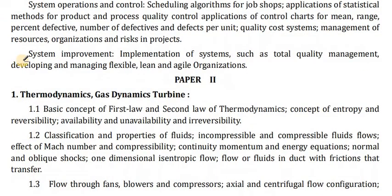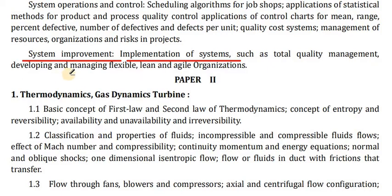Quality ecosystem management, resources, organizations, and systems improvement — implementation of systems such as Total Quality Management, developing and managing flexible, lean and agile organizations. This concludes Paper 1. We will now move toward Paper 2.